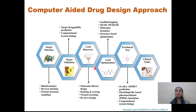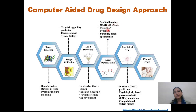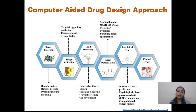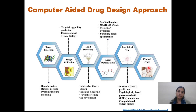Once we select the lead compound, we will go for optimization by multiple methods like scaffold hopping, QSAR, 3D-QSAR, molecular dynamics, and even structural optimization. Then we will go for the preclinical test, which we can also do computationally using Swiss ADME — software by which we can predict the ADMET properties. Then we will go for the clinical trial. This entire process can be completed in six months to one year and is cost-effective.